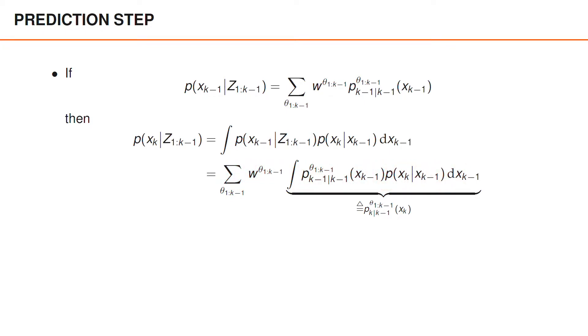If you look closely at the integral, you can see that it expresses the Chapman-Kolmogorov equation for an individual density. The result of this integral is therefore the predicted density given a data association sequence theta_{1:k-1}, where the sub-indices indicate that it is the density of x at time k given measurements up to time k-1. We conclude that the predicted density is the sum over the weights w^{theta_{1:k-1}} times the predicted density for the same sequence of associations.